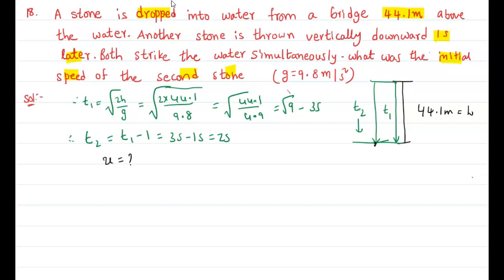Using the equation h equals ut plus ½at². For a freely falling body, acceleration is due to gravity downwards. So h equals 44.1.